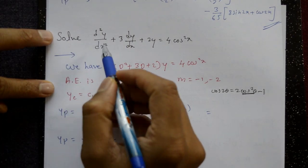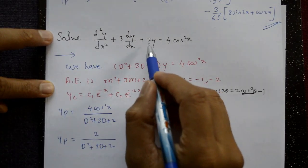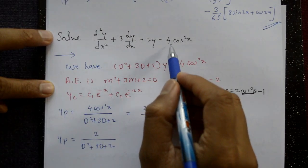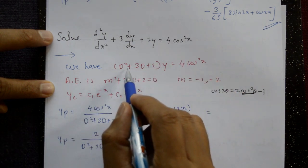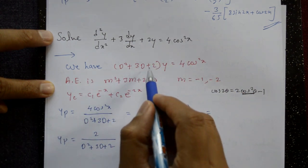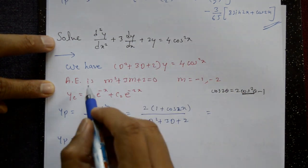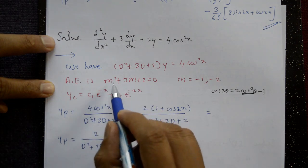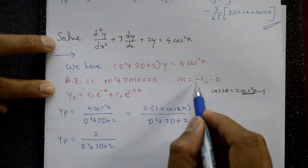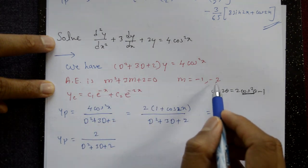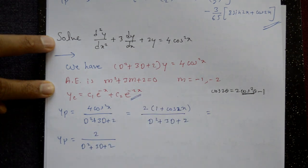Solve d²y/dx² + 3dy/dx + 2y = 4cos²x. We have (D² + 3D + 2)y = 4cos²x. The auxiliary equation is m² + 3m + 2 = 0. The roots are m = -1 and m = -2. This gives the complementary function.